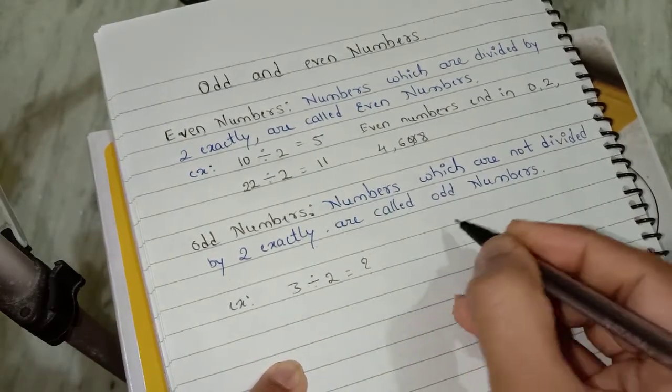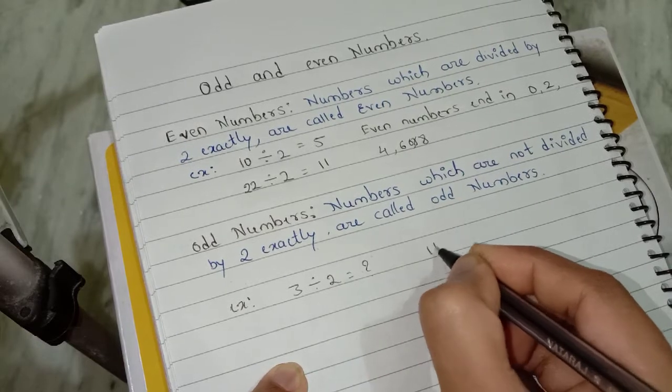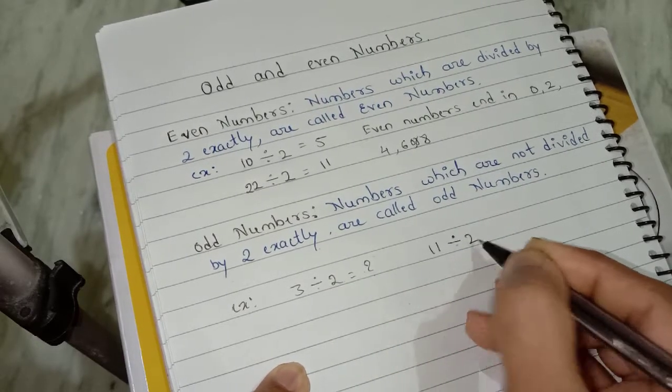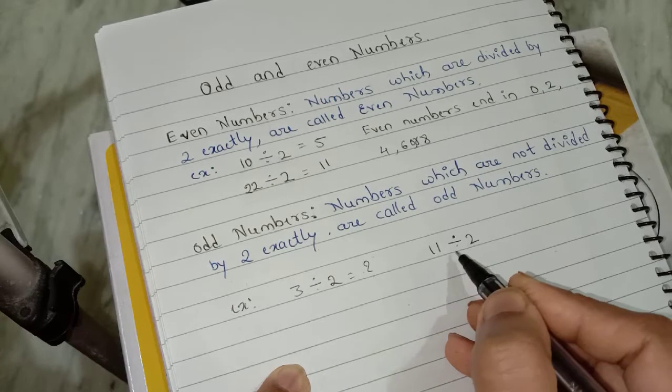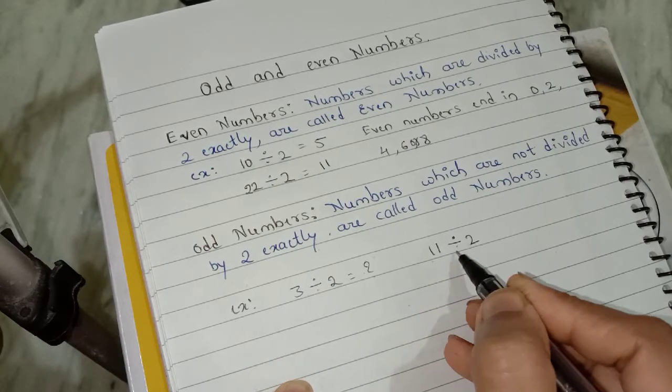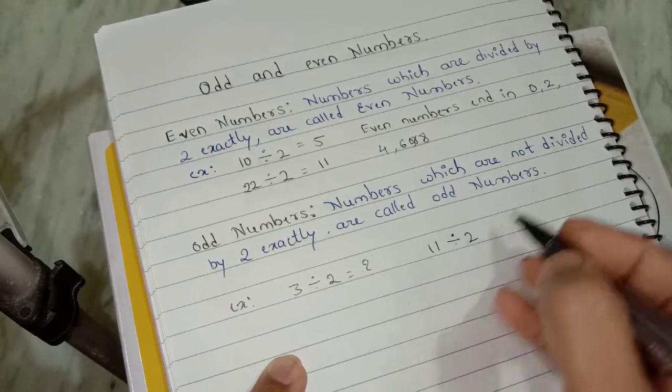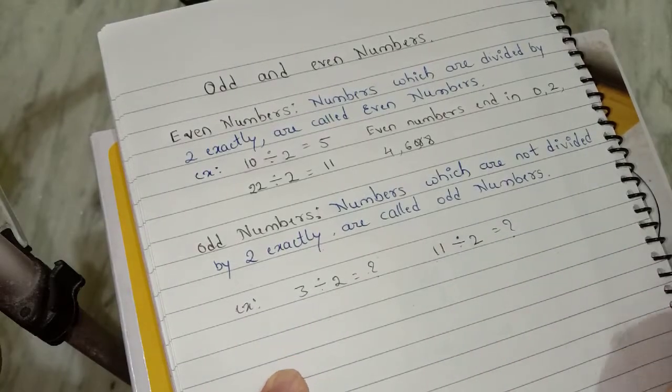I will take one more example. I will take here 11 and I am going to divide it by 2. So we cannot divide 11 by 2 exactly.